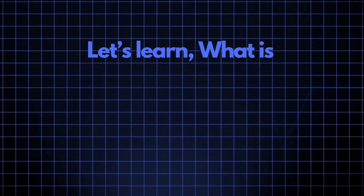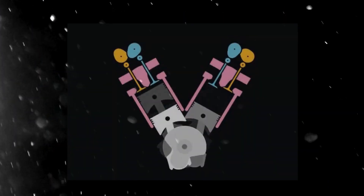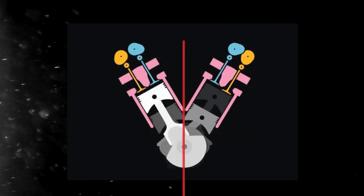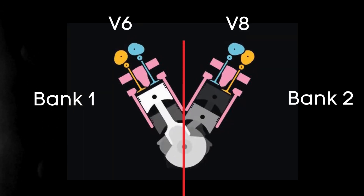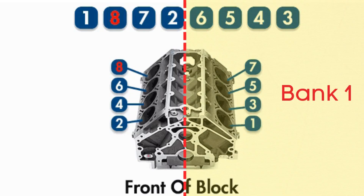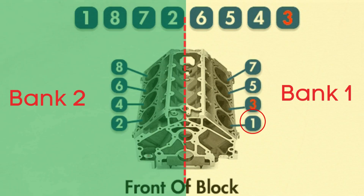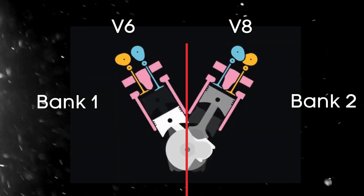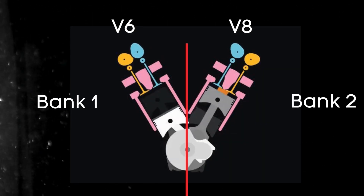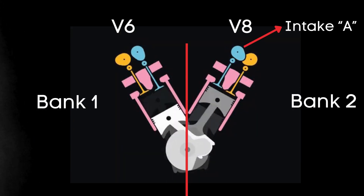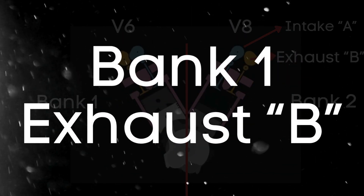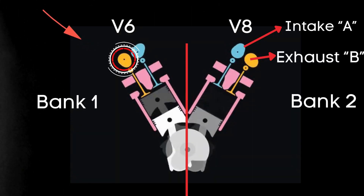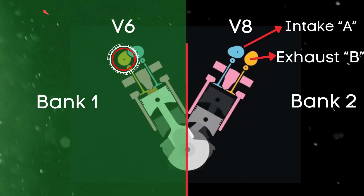Let's break down what the bank one exhaust camshaft actually is. In engines with multiple cylinder banks, like V6 or V8 engines, you'll have two sides, or banks of cylinders. Bank one typically refers to the side of the engine where cylinder one is located, and bank two is on the opposite side. For engines with dual overhead camshafts (DOHC), each bank has two camshafts — one for intake valves and one for exhaust valves. So when we talk about the bank one exhaust camshaft, we're referring to the camshaft that controls the exhaust valves on the side of the engine where cylinder one is located.